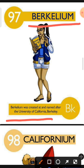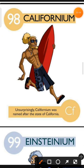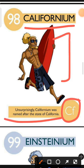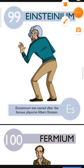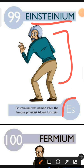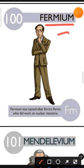Element number 98 is Californium. The characteristic of Californium is: unsurprisingly, Californium was named after the State of California. Element number 99 is Einsteinium. The characteristic of Einsteinium is: Einsteinium was named after the famous physicist Albert Einstein. Element number 100 is Fermium. The characteristic of Fermium is: Fermium was named after Enrico Fermi who did work on nuclear reactions.